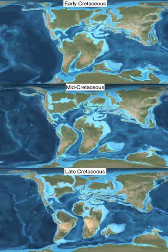Similar but more complex patterns have been found in the oceans. Extinction was more severe among animals living in the water column than among animals living on or in the seafloor, as animals in the water column are almost entirely dependent on primary production from living phytoplankton, while animals on or in the ocean floor feed on detritus or can switch to detritus feeding. The largest air-breathing survivors of the event, crocodilians and champsosaurs, were semi-aquatic and had access to detritus. Modern crocodilians can live as scavengers and can survive for months without food, going into hibernation when conditions are unfavorable. These characteristics have been linked to crocodilian survival at the end of the Cretaceous.